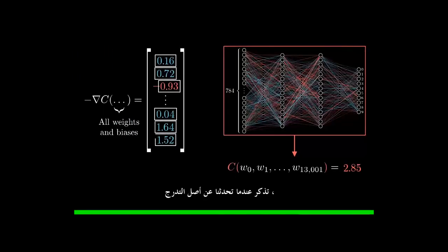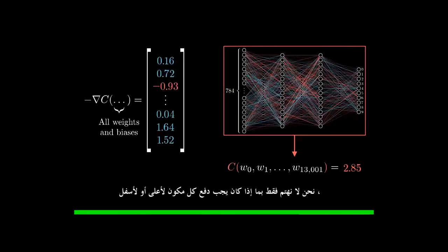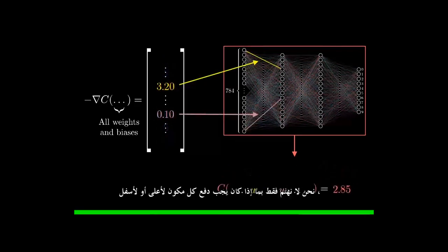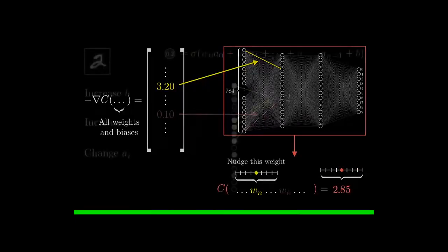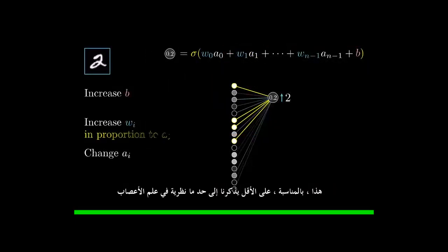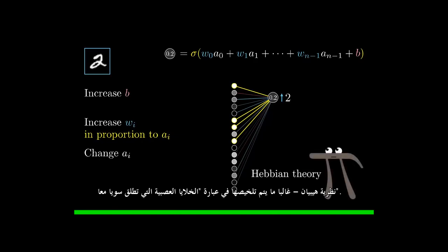Remember, when we talk about gradient descent, we don't just care about whether each component should get nudged up or down, we care about which ones give you the most bang for your buck. This, by the way, is at least somewhat reminiscent of a theory in neuroscience for how biological networks of neurons learn, Hebbian theory, often summed up in the phrase, neurons that fire together wire together.